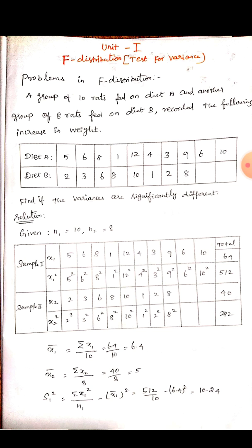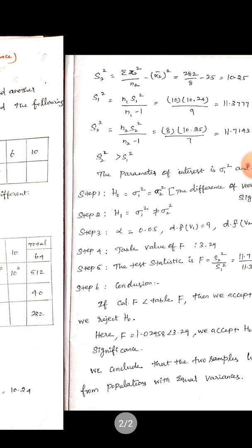Similarly, X2 mean for the second sample: summation of X2 divided by number of data, which is 8. Now, s1 square is the variance of sample 1: summation of X1 square divided by N1, minus X1 bar whole square. Substituting the values, we get s1 square equals 10.24.